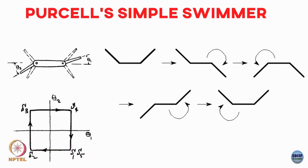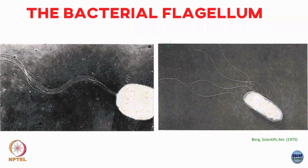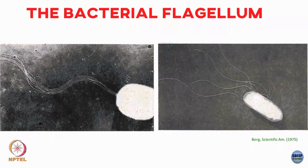One could ask: what strategies has nature evolved in order to swim in this sort of world? It turns out that one of the simplest strategies nature has evolved is to have some sort of helical motion, and that is most prominently seen in the bacterial flagellum. To recap: bacteria have long flagella, and when they want to move in a given direction all these flagella bunch up together and they rotate.